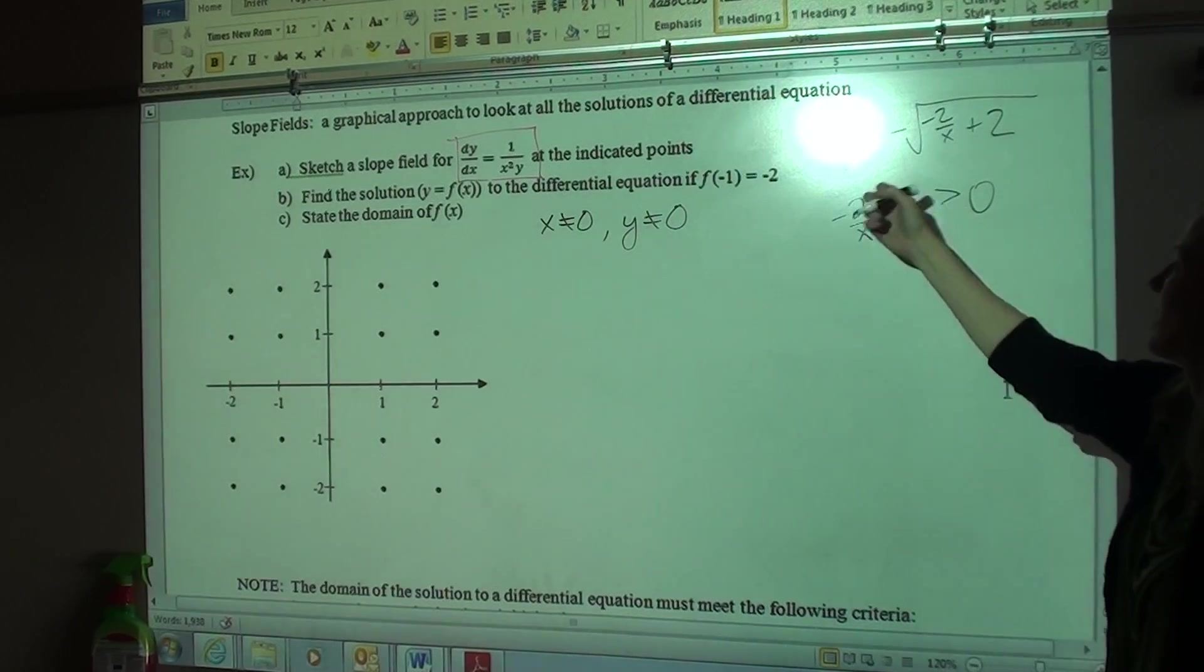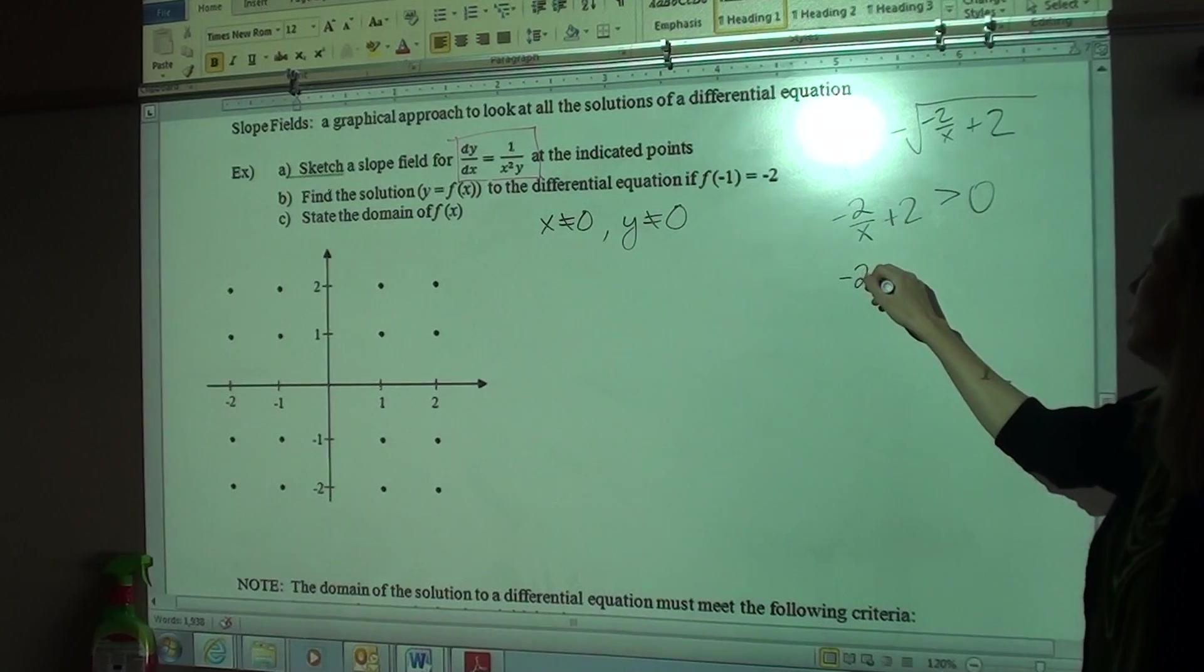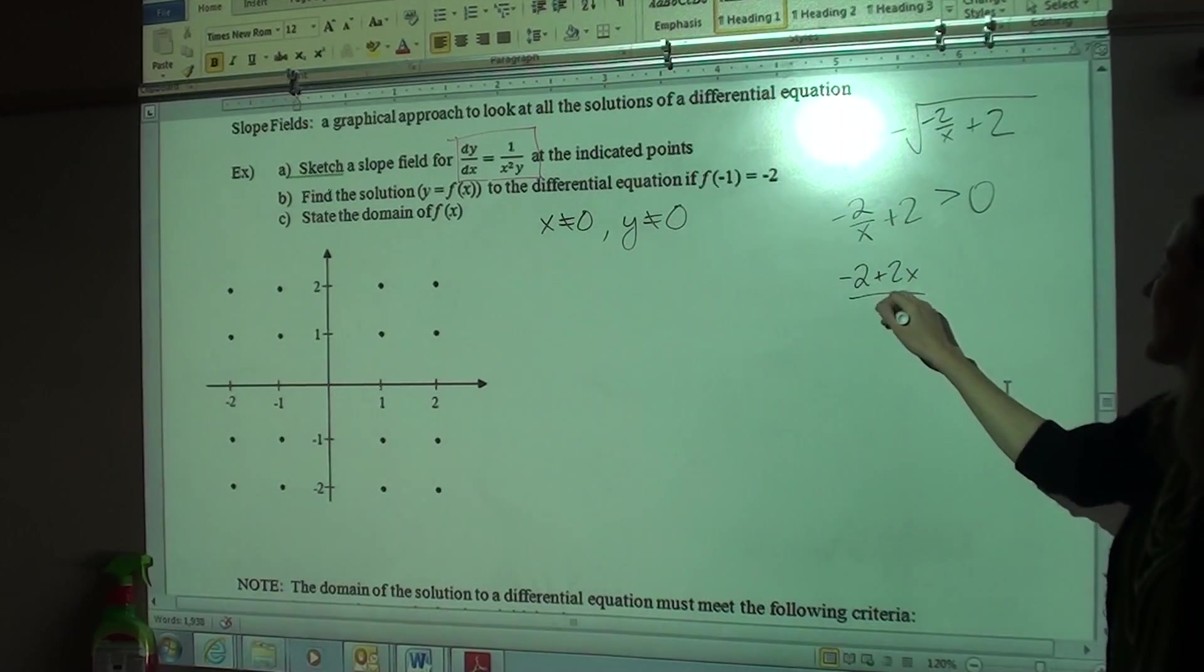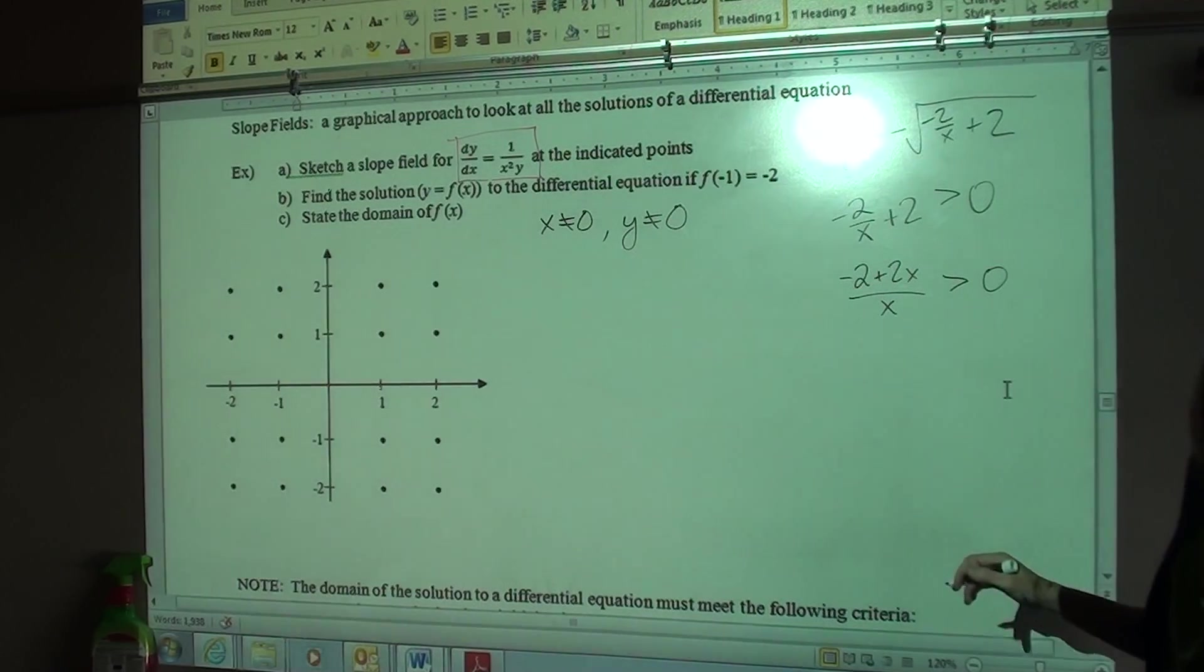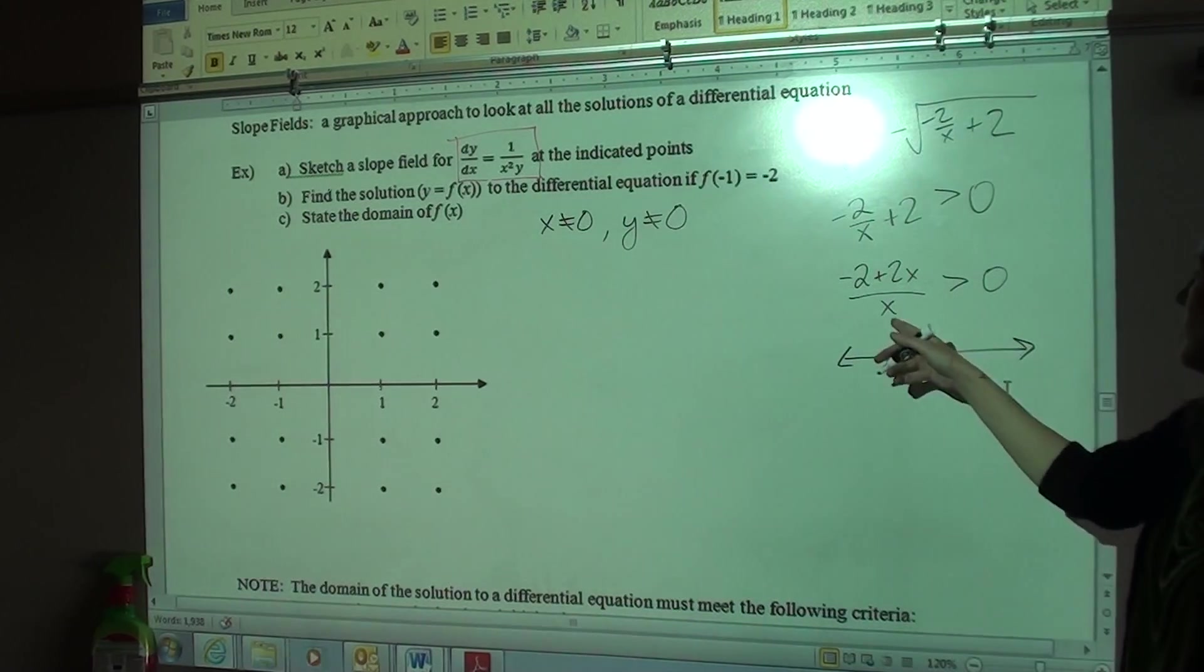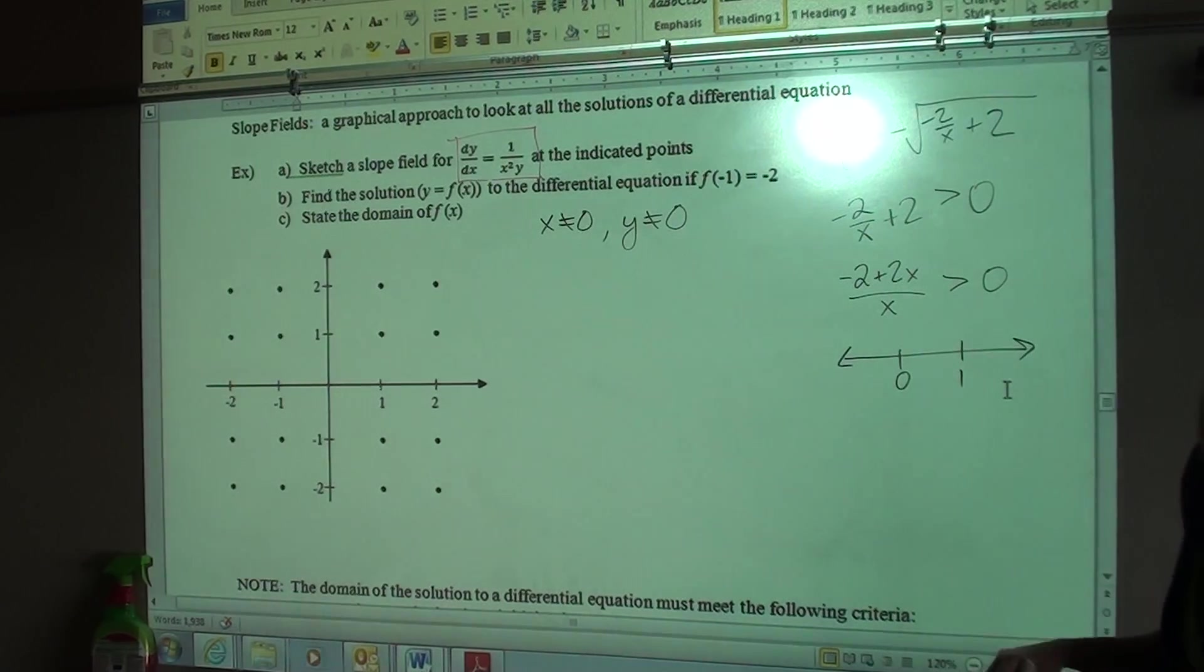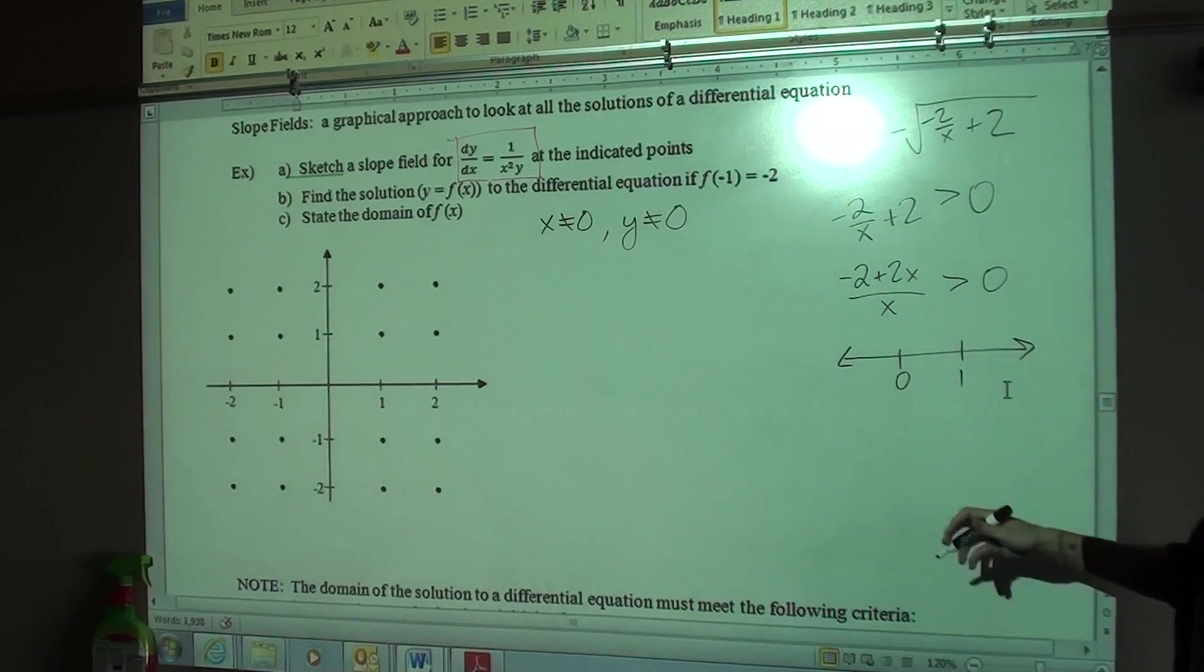We have to find the critical numbers and make a sign line. So first thing I'm going to do is get this written as one big rational expression. So we have negative 2 plus 2X over X. Has to be positive. So critical numbers, well, we know we get a zero from the bottom. And from the top, the top would equal zero if X was 1. All right.